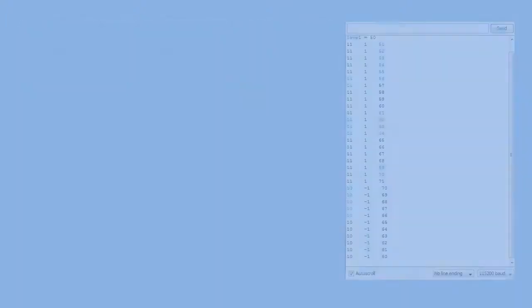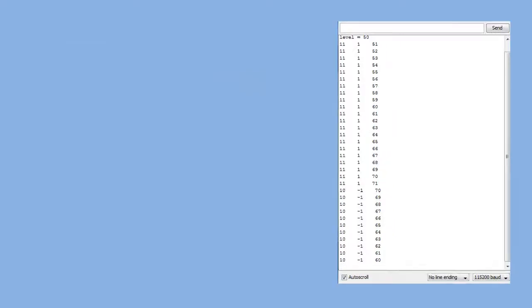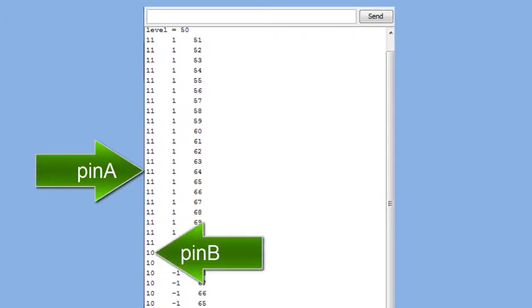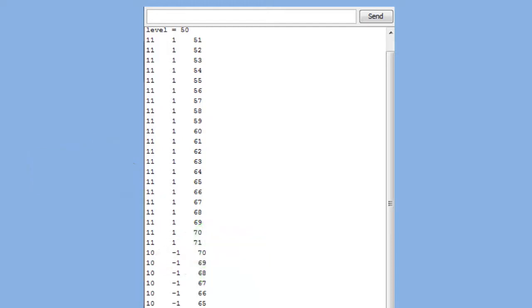Let's take a look at the data in the monitor window. The first column represents the two terminals on our encoder. The first digit is pin A. The second digit is pin B. One is on. Zero is off. The middle column represents the direction I'm turning the knob. One is clockwise. Minus one is counterclockwise. The last column shows how a value, which I call level, changes as I turn the knob forward and backward.